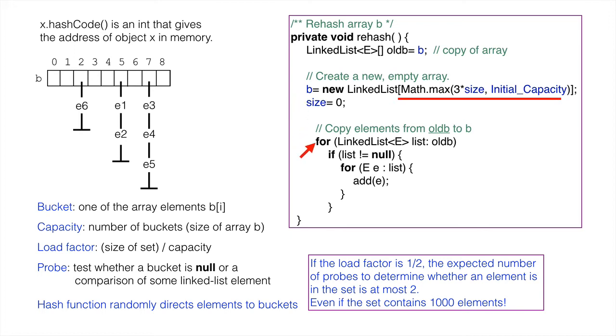Now, process each bucket in the original array. If it is a linked list, that is, it's not null, add each element of the linked list to the new array B. Note that the original method add is used.